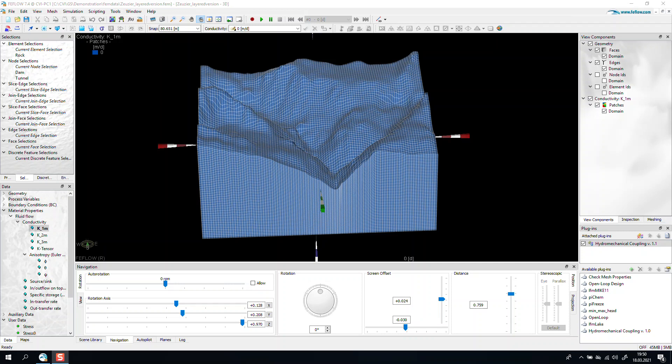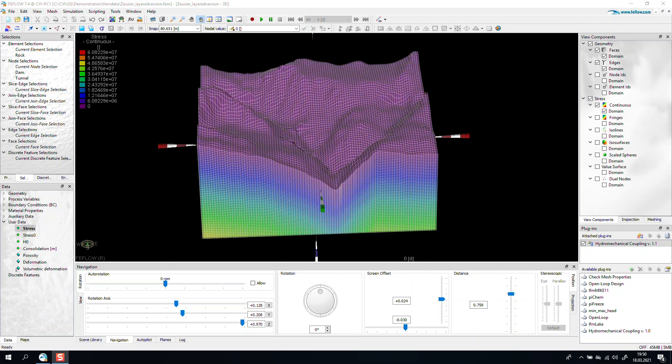One of the first things that you need to do in your model is to add an anisotropy distribution to the conductivity. Just activate the option behind the problem settings in FEFLOW.